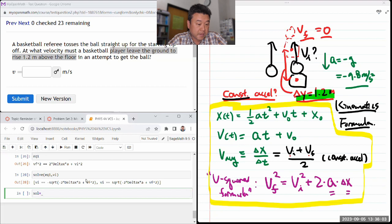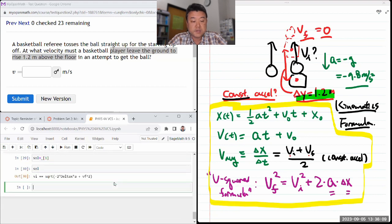So underscore means the previous output, and I'm going to pick the second element which has index one of the previous output. So that's going to be my solution. Plug in the numbers with the substitute syntax. So my acceleration is minus 9.8 and my delta x will be 1.2 - make sure these have opposite signs. My v final is zero.